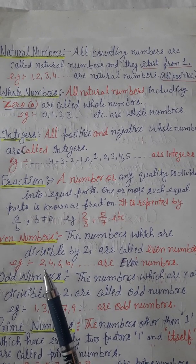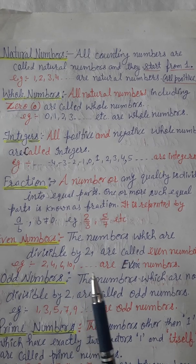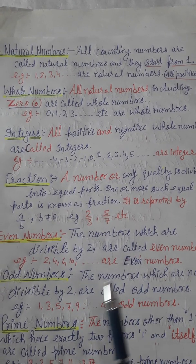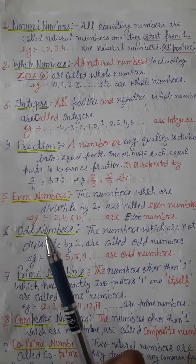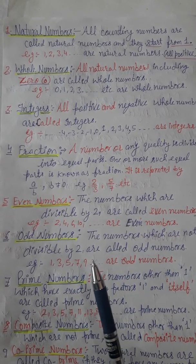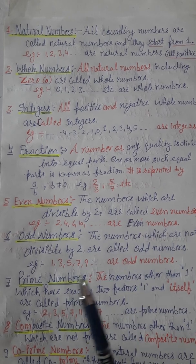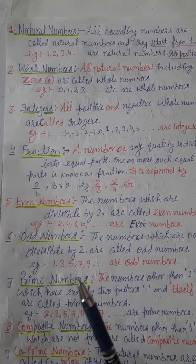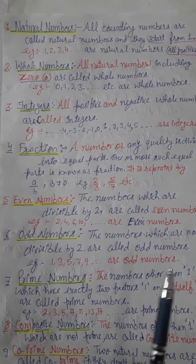Odd numbers: Numbers which are not divisible by 2 are odd numbers, such as 1, 3, 5, 7, 9.